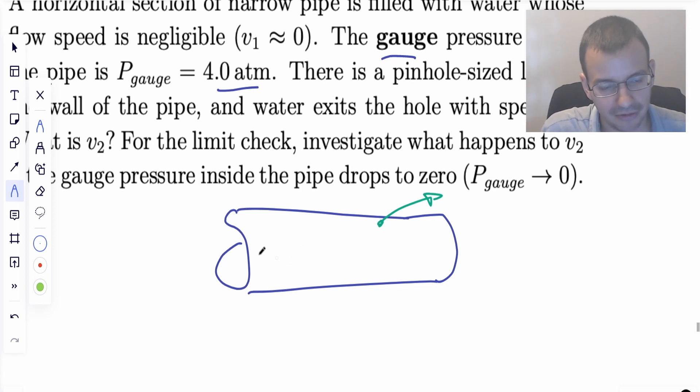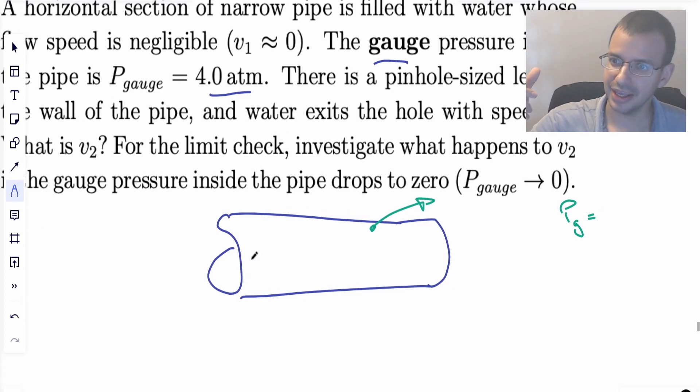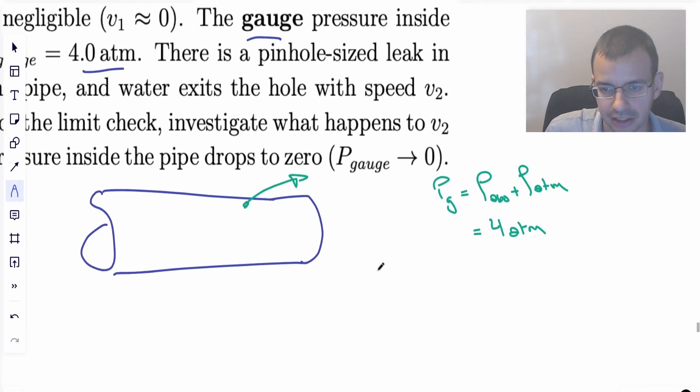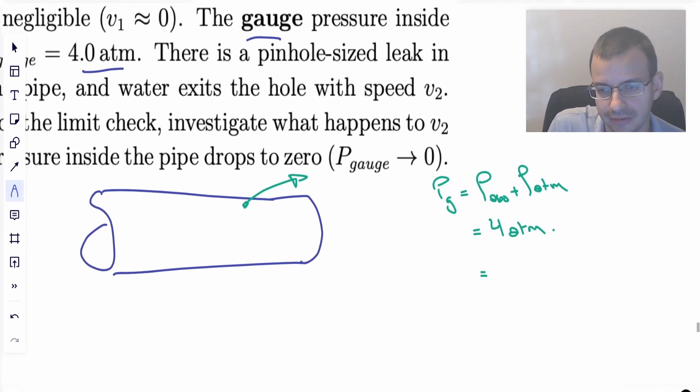So inside we have pressure gauge. The idea with pressure gauge is it's the pressure read by the gauge. Pressure is almost always read as a differential just for practical purposes in life. And so what this really means is this is pressure absolute plus pressure atmosphere. So when this says 4 atmospheres, what this really means is one atmosphere is 101,000 Pascals for one atmosphere. That's just a conversion factor.